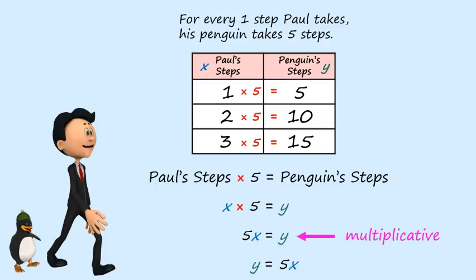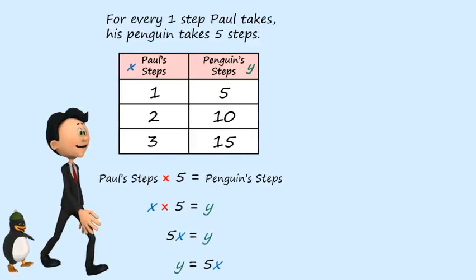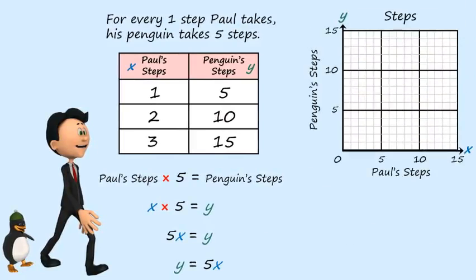Before we leave Paul and his penguin, I thought it might be fun to graph this information. You were thinking the same thing, weren't you? So, let me give you a coordinate plane here, and let's plot points. Our first point is x equals one, y equals five. From zero, we move over one and up five. And there's our point.